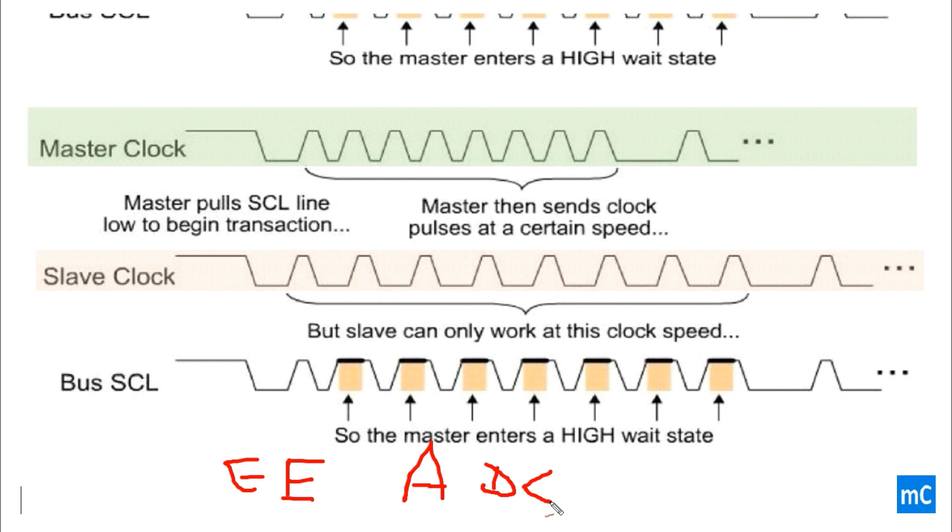So, if the master reads the ADC value from the slave, it may take the previous ADC value. It may not be an actual ADC value at that time.